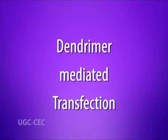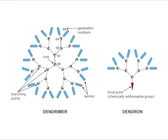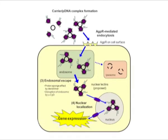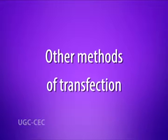Next is dendrimer-mediated transfection. This method uses highly branched organic compounds, called dendrimers, to bind the DNA and get it into the cell. Positively charged amino groups on the surface of dendrimers interact with the negatively charged phosphate groups of the DNA to form a DNA-dendrimer complex. These complexes bound to the cell surface are taken into the cell by non-specific endocytosis.